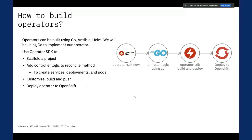Operators can be built using Go, Ansible, or Helm. In this demo we'll be using Go. Operator SDK is a framework that uses the controller-runtime library to make writing operators easier. It provides quick tools for scaffolding and code generation to bootstrap a new project, and it provides high-level APIs and abstractions to communicate with your Kubernetes or OpenShift cluster.